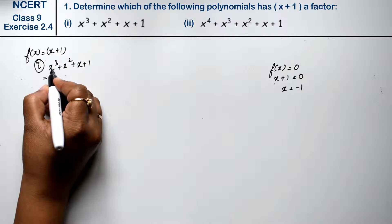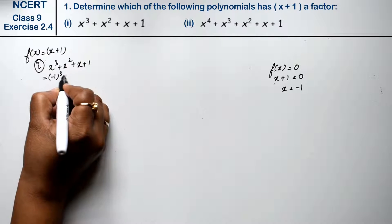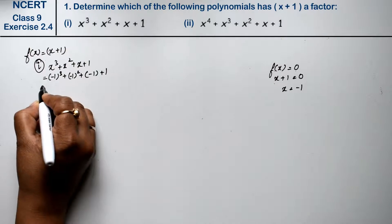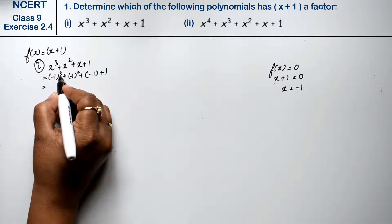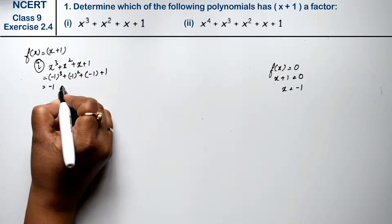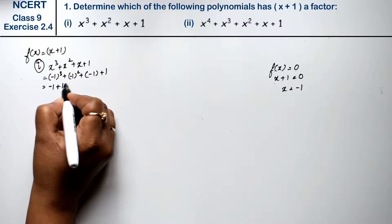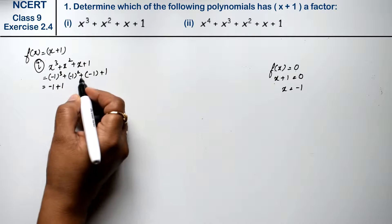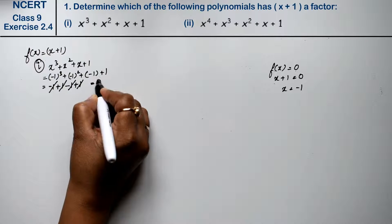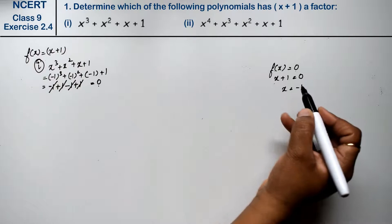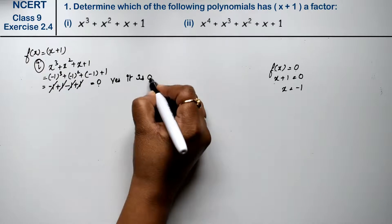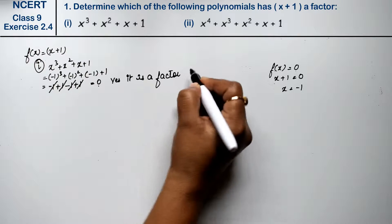First part: f(x) = x³ + x² + x + 1. Substituting x = -1: (-1)³ + (-1)² + (-1) + 1. Since the cube is an odd power, it gives minus 1. Even power gives plus 1. So: -1 + 1 - 1 + 1 = 0. Since f(-1) = 0, according to the factor theorem, yes, (x+1) is a factor of this polynomial.